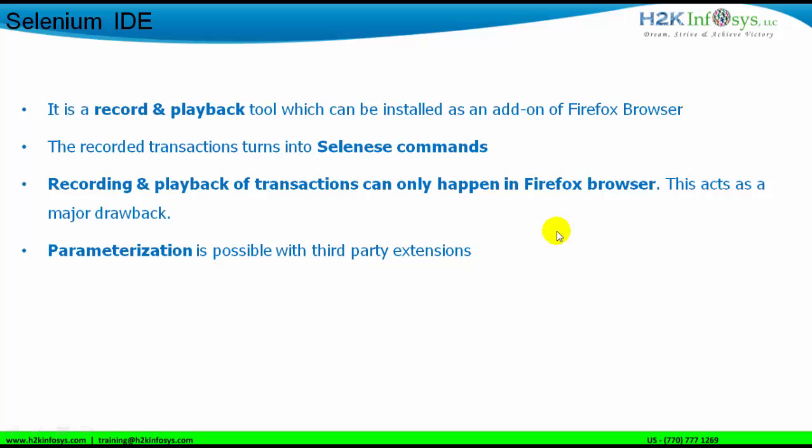The next negative aspect of Selenium IDE is parameterization. Parameterization is a process in which we test the same functionality of the application with different data sets. For example, testing the same login procedure on a Gmail app with 10 different usernames and passwords. Conducting parameterization in Selenium IDE is a pain — we need to use third-party extensions. If that third-party extension stops working due to technology changes, we are stuck. That's another drawback of using Selenium IDE.